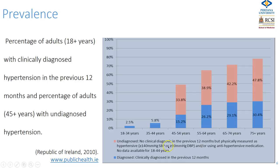This slide from publichealth.ie shows those with clinically diagnosed hypertension in the previous 12 months and the percentage of adults aged 45 and above with undiagnosed hypertension. As they get older, the salmon-coloured bars show the level of undiagnosed hypertension — there is quite a lot of undiagnosed hypertension, and as doctors we need to be vigilant in screening and picking up those patients.